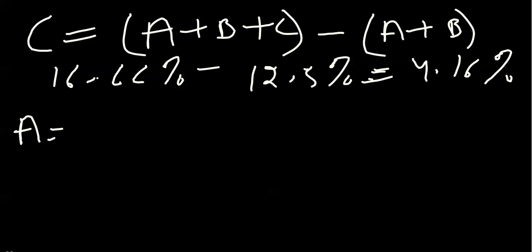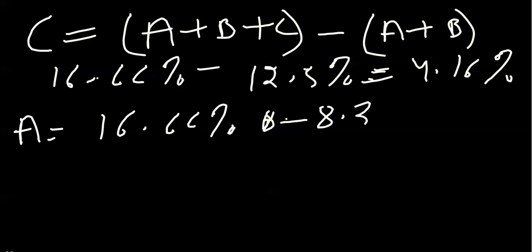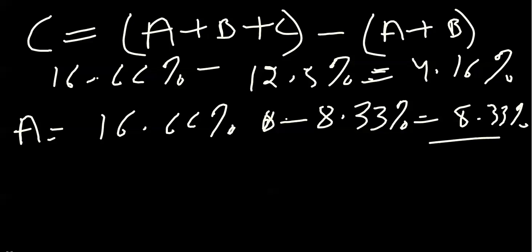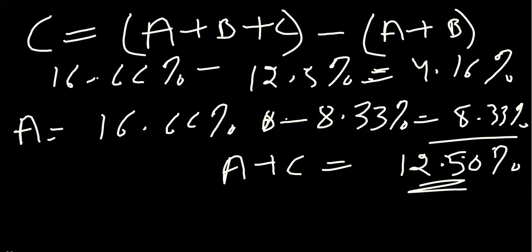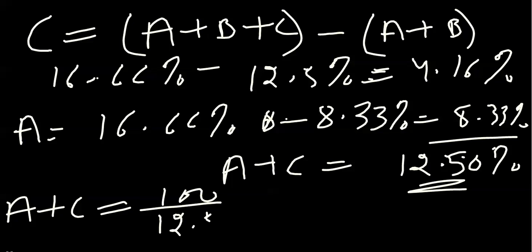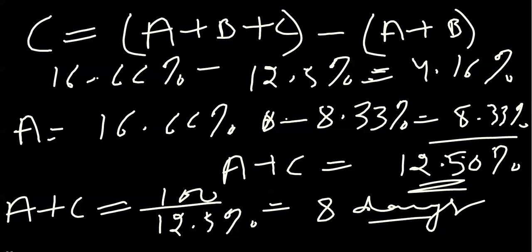To find A's efficiency, we subtract B and C's efficiency from the combined A, B, and C efficiency: 16.66% minus 8.33% equals 8.33% per day. The combined efficiency of A and C is 8.33% plus 4.16%, which equals 12.50%. Therefore, A and C together take 100 divided by 12.5%, which equals 8 days.